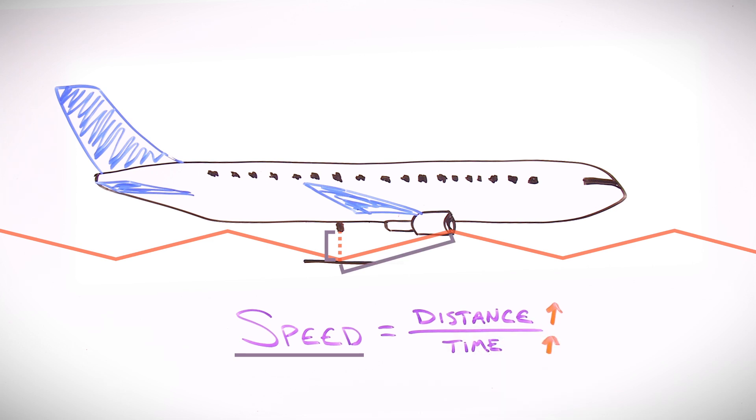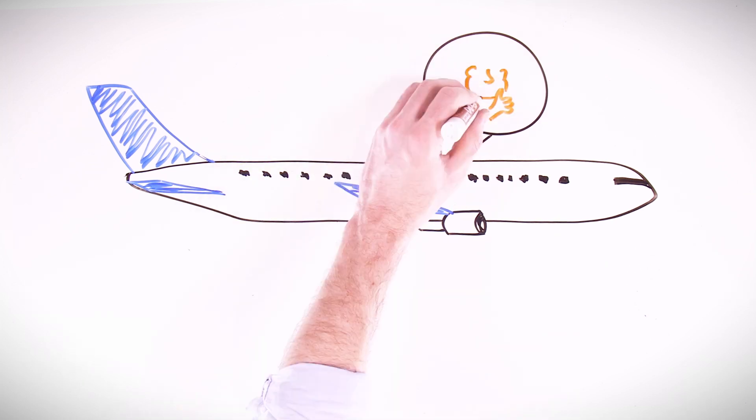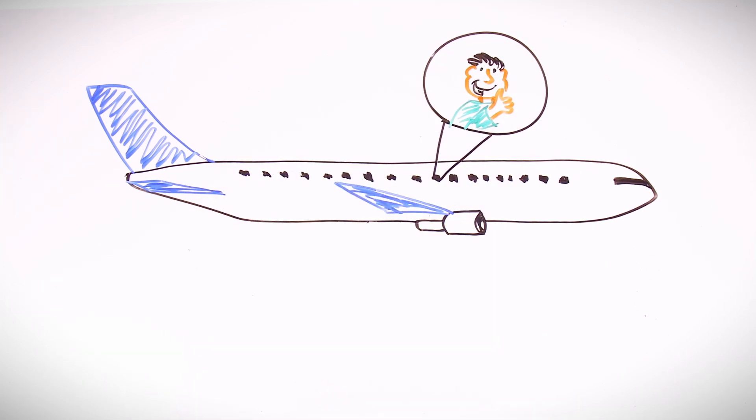The moving plane is experiencing time more slowly than the unmoving reference point. And this actually happens. When you fly, you age more slowly. It's a teeny tiny fraction of a second more slowly, but still more slowly.